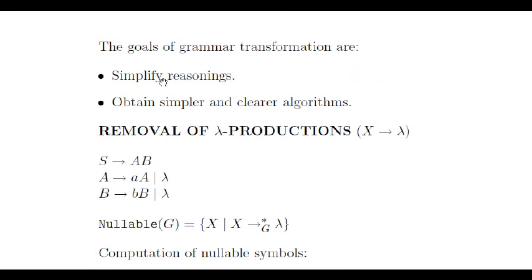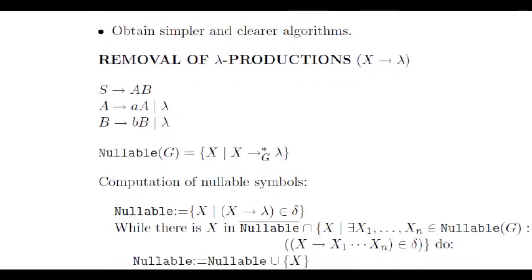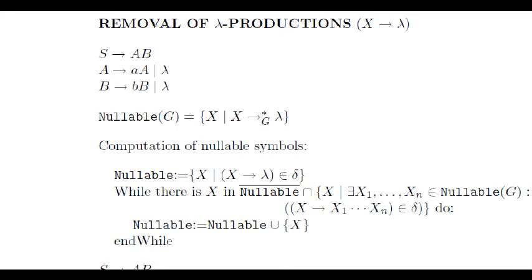These properties will allow us to reason about grammars in a simpler way and to obtain simpler algorithms for them. The goal of the first transformation is to remove lambda productions, that is, remove the rules whose right hand side is the empty word.